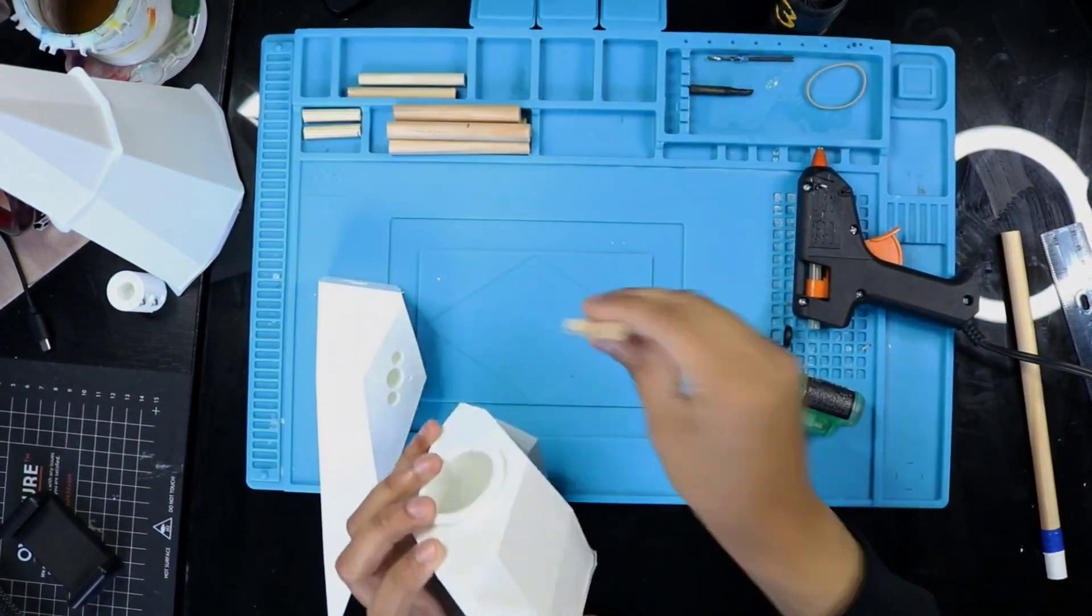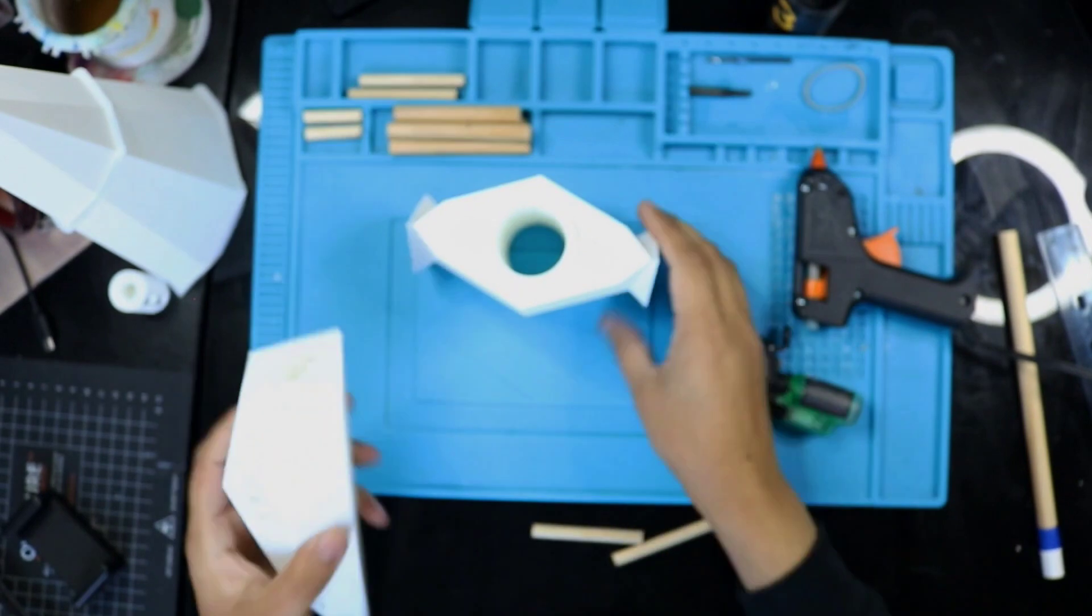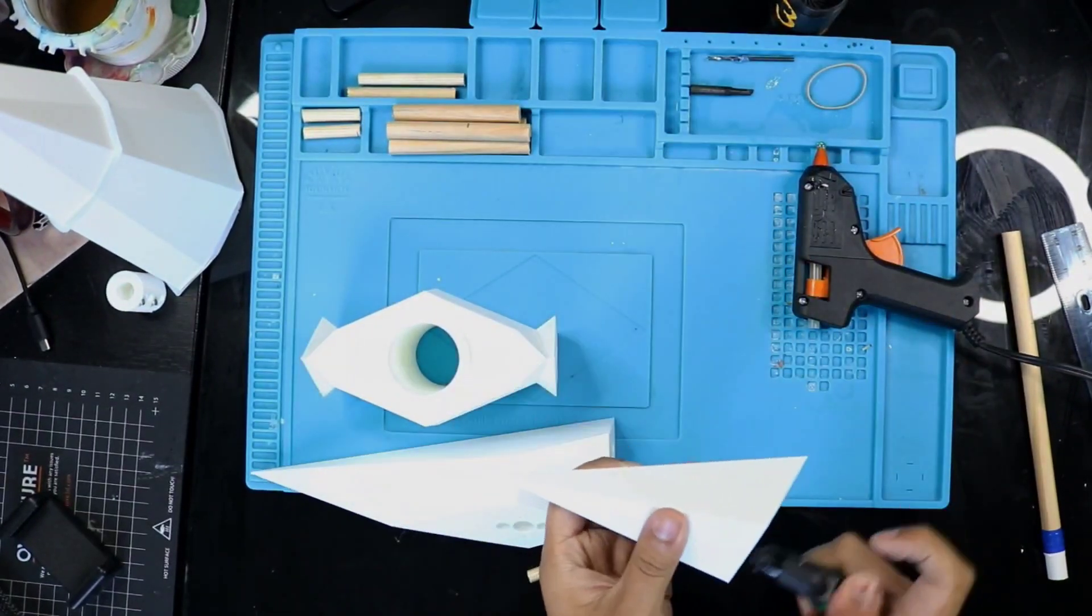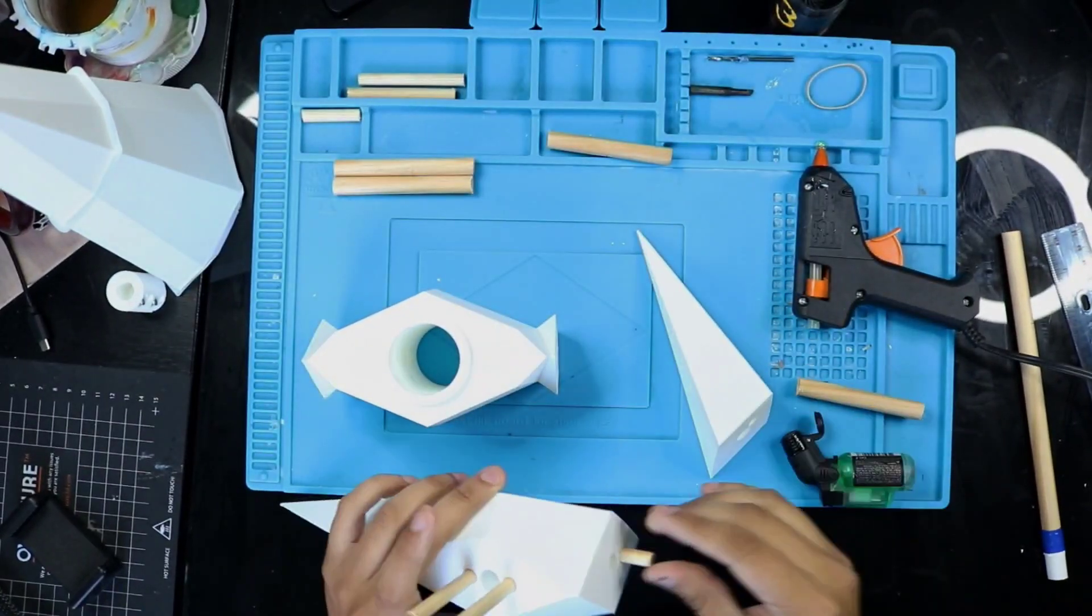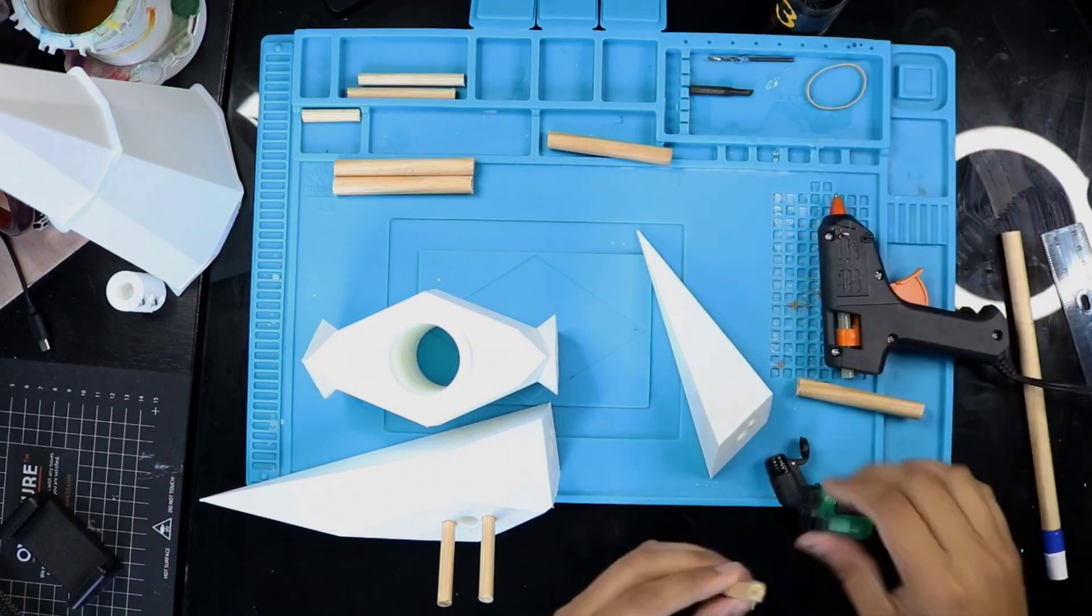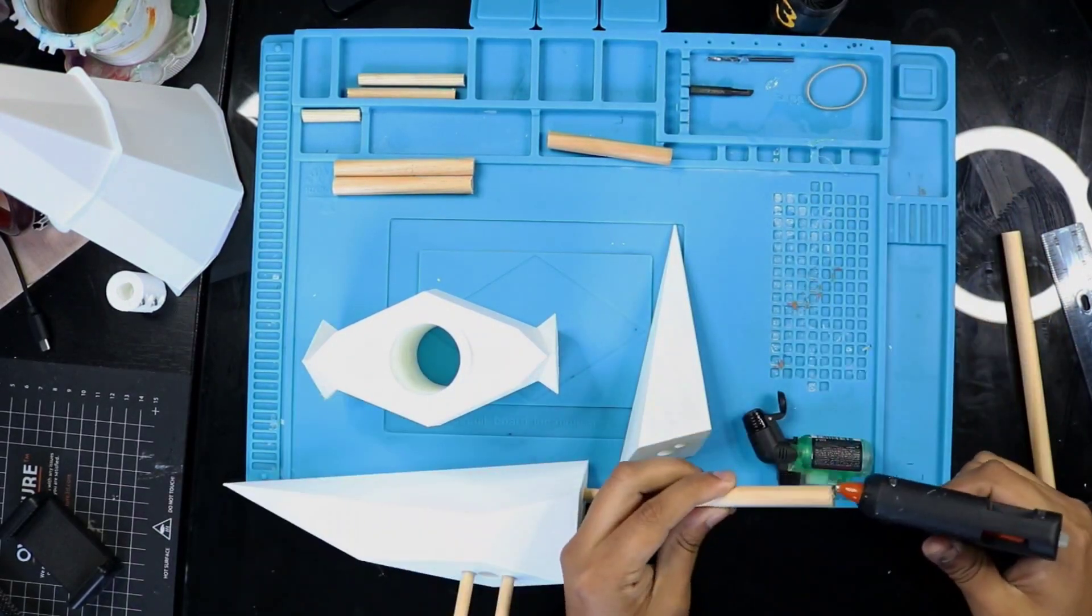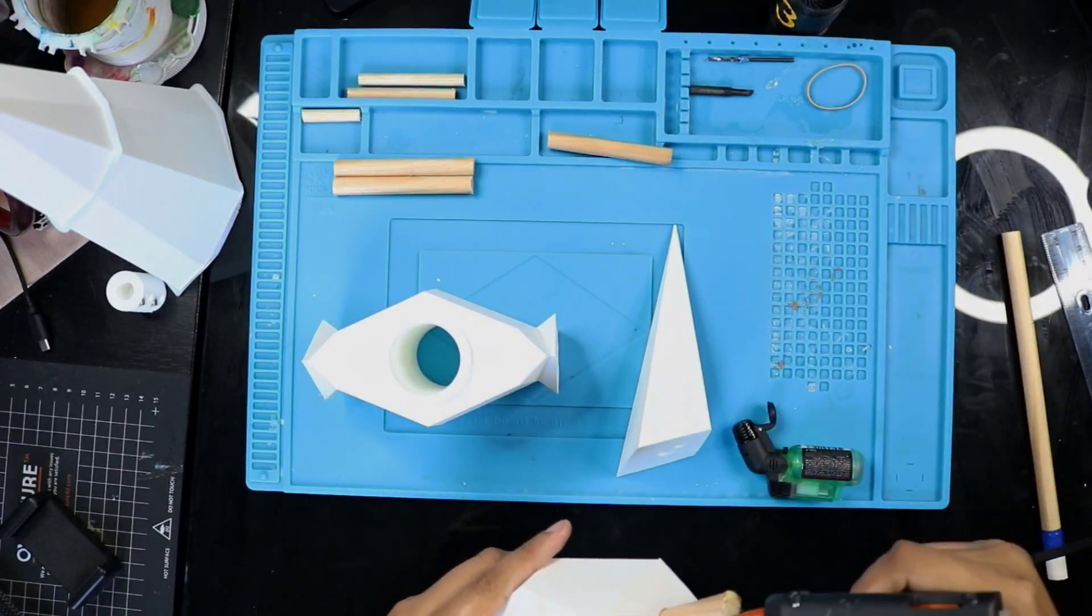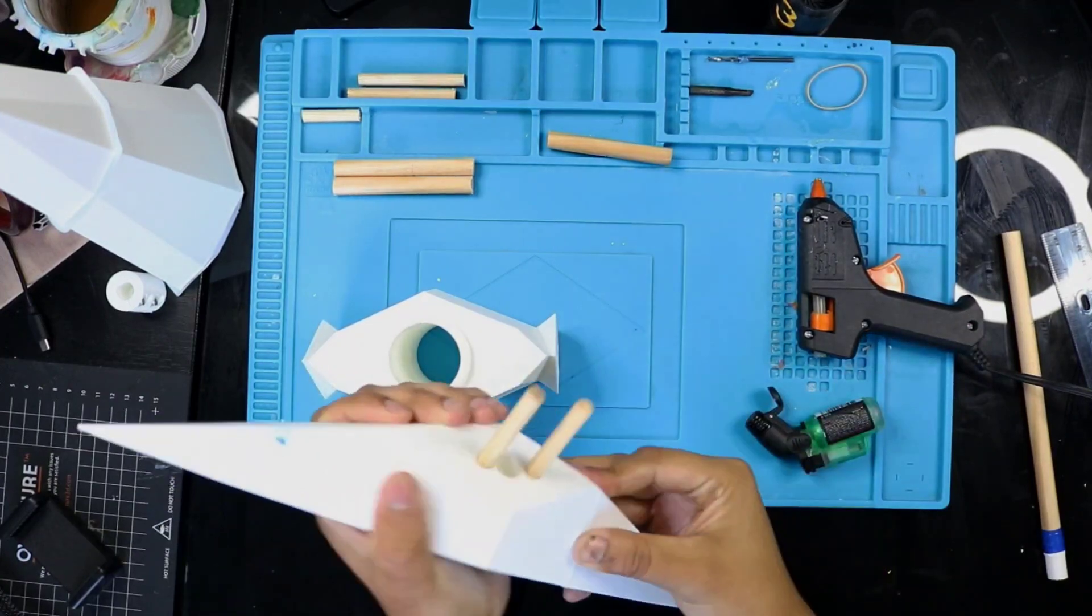One trick that I learned, especially in the area I live which is colder, is I like to warm the parts up, especially where all the holes the wooden dowels are going to go. That way when you add your hot glue onto the wooden dowel, it doesn't cool down fast enough so you can get it all the way in, and then it actually warps the plastic inside just a little bit so it goes into all the grooves inside, making a very strong fit.